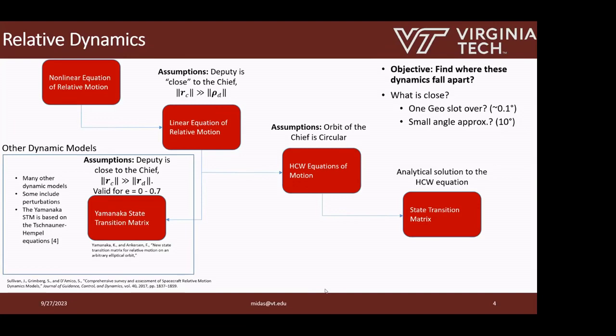HCW equations are extremely popular because they're very computationally cheap to solve. You can solve entire trajectories without any numerical integration. The linear equations of relative motion and the nonlinear equations both require numerical integrators to solve trajectories, so they can get quite heavy on the computational side. D'Amico has put together an amazing survey paper that goes over all the non-vanilla dynamics in the relative space.